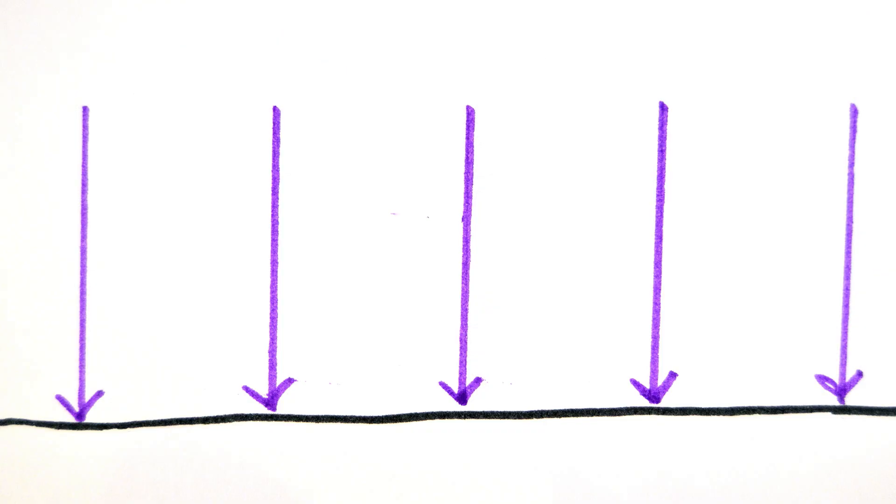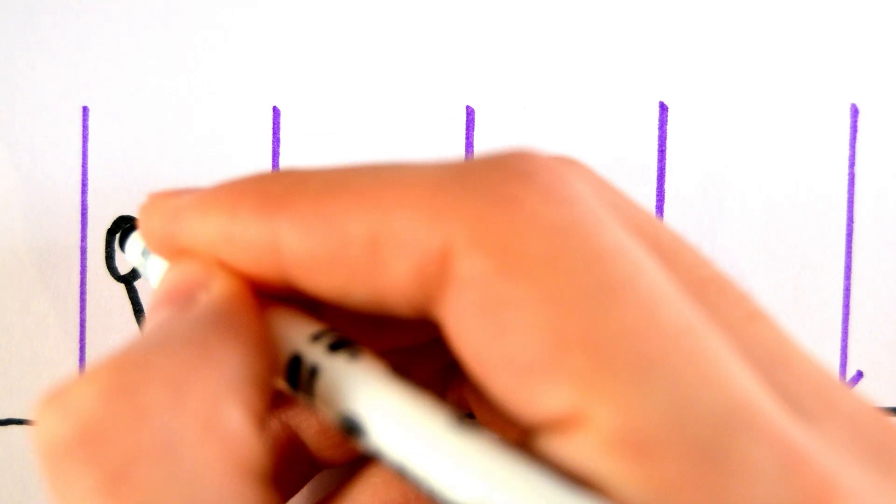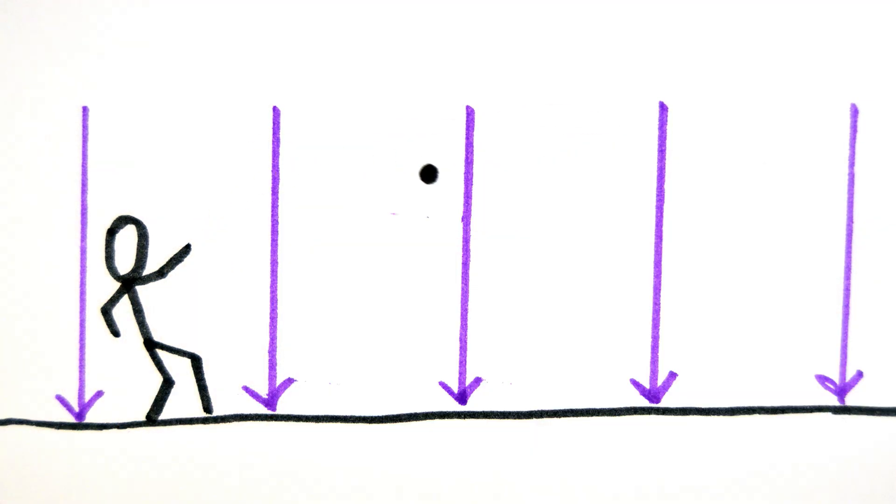This is why we assume the acceleration due to gravity is a constant of 9.81 meters per second squared, because the change at small vertical heights is negligible.